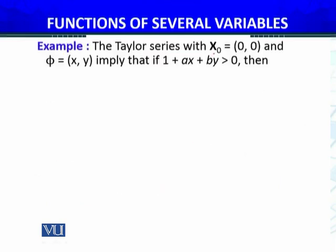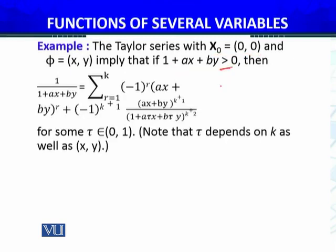The Taylor series with x-naught equals (0,0) and phi equals (x,y) imply that if 1 plus ax plus by greater than 0, then 1 over the function f of x. f of x equals summation r equals 1 to k, the differential.